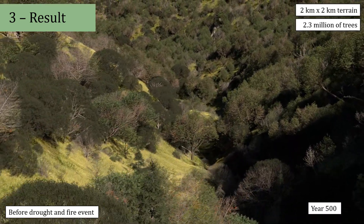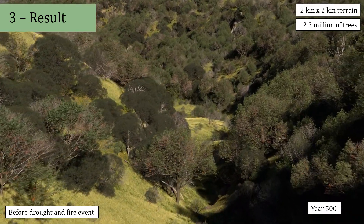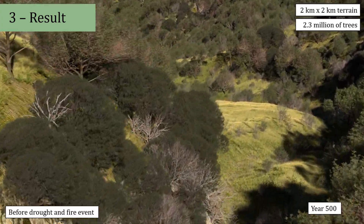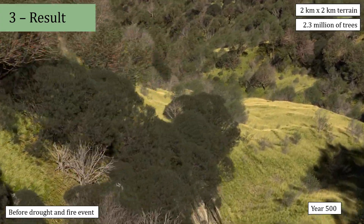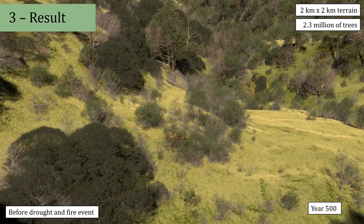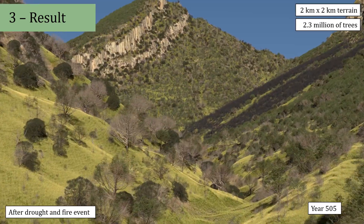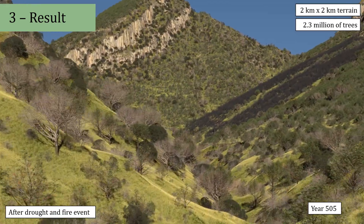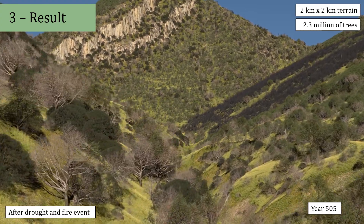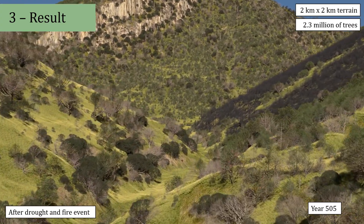Another close-up example highlighting model variety. This scene shows the state of the ecosystem immediately after a drought period and a fire event.